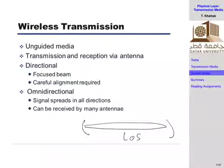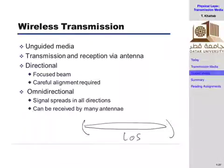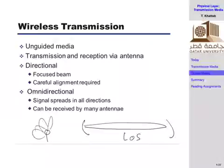The other option is omnidirectional, which means the signal is spread around in all directions with the same value. These are the two extremes — one that is very directional and the other that is omnidirectional, where the transmitter sends the signal everywhere and the signal power is spread in all directions.